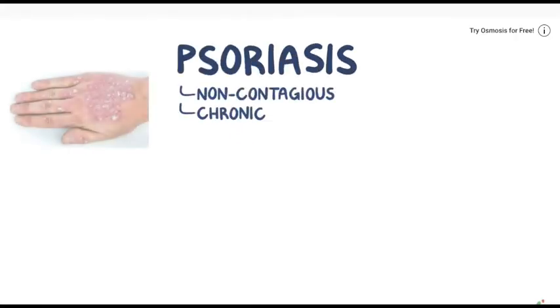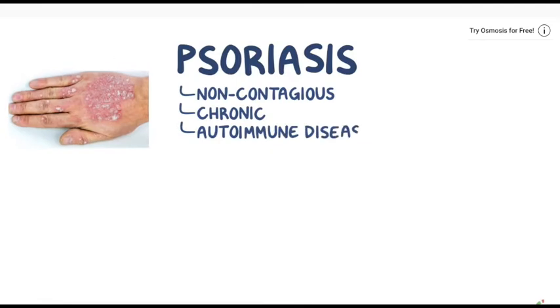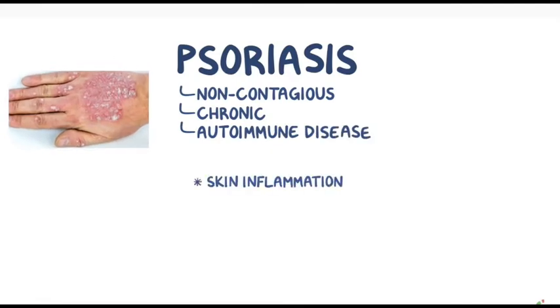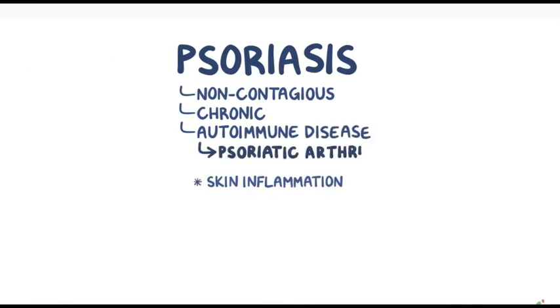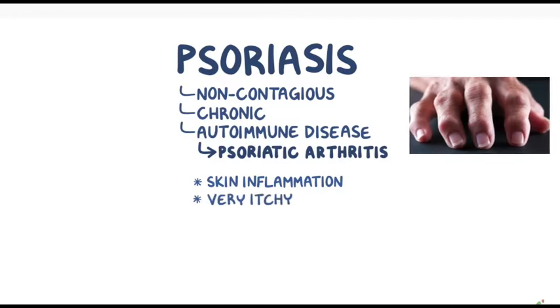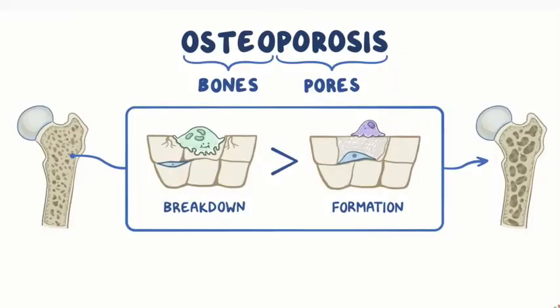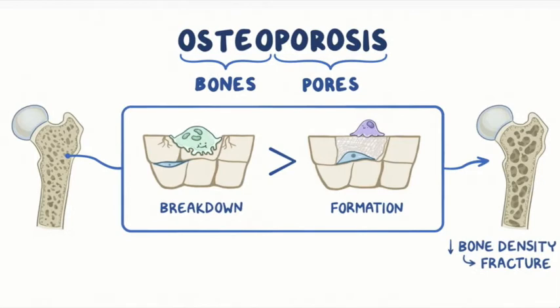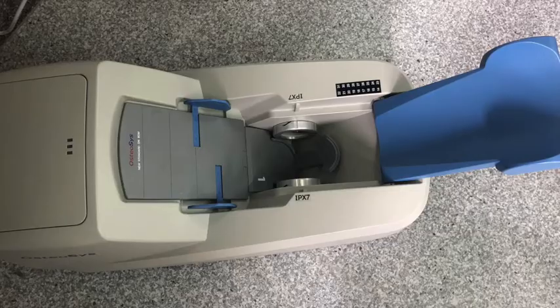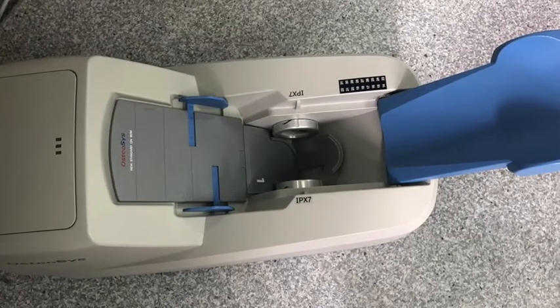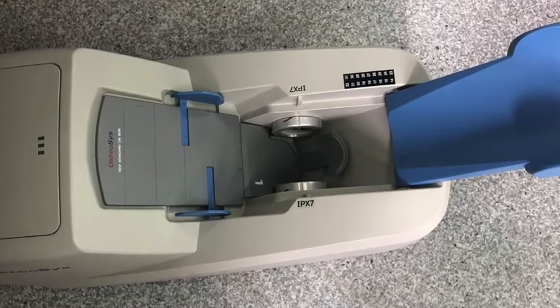Psoriasis is a skin disease which is non-contagious, and the severe type can affect joints, which is psoriatic arthritis. Osteoporosis is characterized by low bone mineral density and predisposing to fracture. The bone mineral density in this study was measured by quantitative ultrasound.